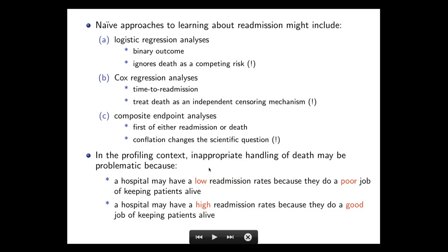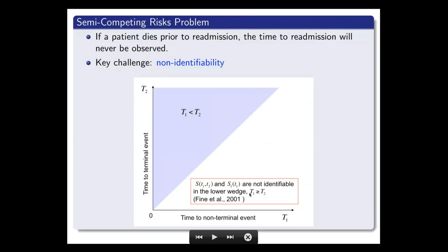But as a statistician, when you want to estimate the readmission rate for this type of application, you will think of a much simpler approach, like what we call naive approaches. Maybe one of them could be logistic regression analysis, considering binary outcome, whether patients were readmitted or not at fixed time, maybe 30 days after discharge. But this approach ignores the death as competing risk. Or you can consider other univariate survival analysis, like Cox regression, and then your outcome is time to readmission. But again, this is univariate approach, and you treat the death as an independent censoring mechanism. So you ignore the dependence between death and readmission events. And people also consider the composite endpoint analysis, and in this case, your outcome will be the first of either readmission or death. But this is kind of mixed outcome.